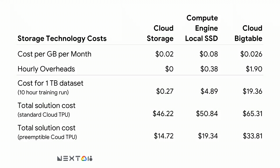Now that we have choices, how do you choose? Google Cloud Storage is $0.02 per gigabyte per month and the cheapest, with zero hourly overhead since you only pay when pulling data. Other storage systems have different prices. For a one-terabyte training dataset trained for 10 hours, here are the costs for storage and everything all-in, whether using a standard Cloud TPU or a preemptible Cloud TPU.